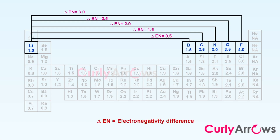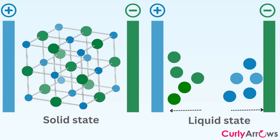Another easy way to spot an ionic bond is to look for the combining atoms' electronegativity difference. If the difference is above 1.7, the bond type is definitely ionic. In the solid state, the ions hold definite positions to form crystal structures. However, in the solution state, the ions are mobile, proven by their electrical and heat conductivity.